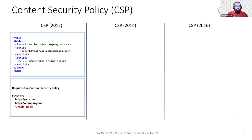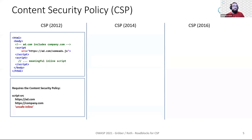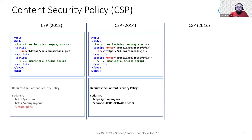CSP was already developed in 2012. In the snippet here, you can see there is a script from add.com that programmatically adds a script from company.com, and there is also inline JavaScript in the HTML. Back in 2012, the only way to allow those scripts was to add the domains to the allow list and also allow inline scripts using the 'unsafe-inline' expression. However, in 2014, they added support for nonces to the CSP standard. By embedding such a nonce as an attribute to a script tag, we can now allow trusted inline scripts to be executed.